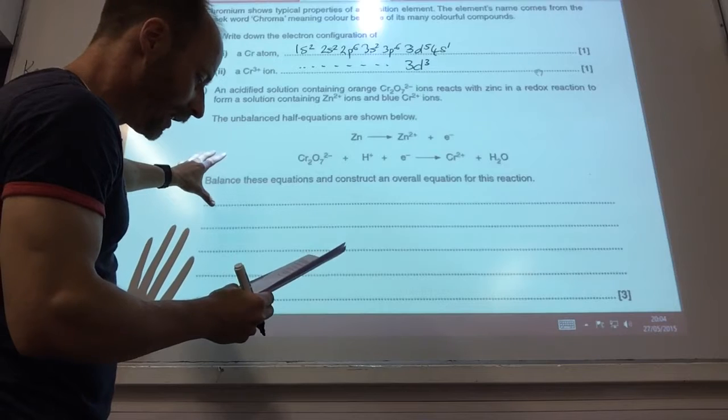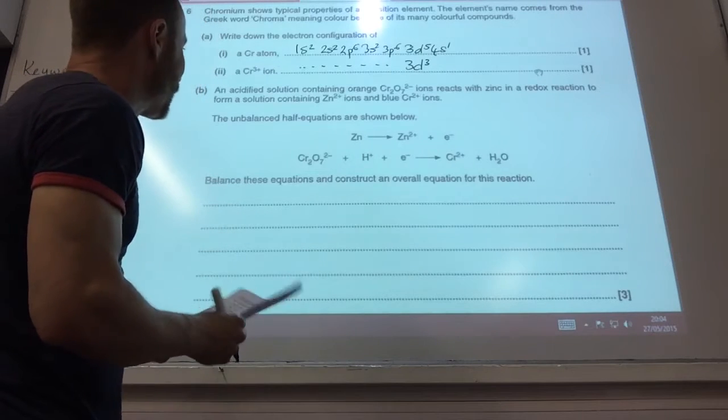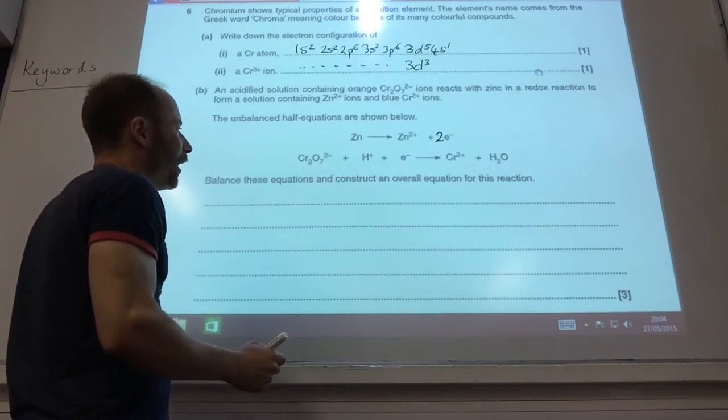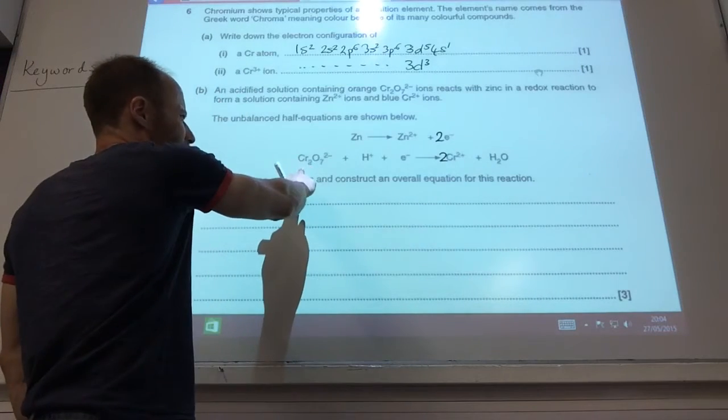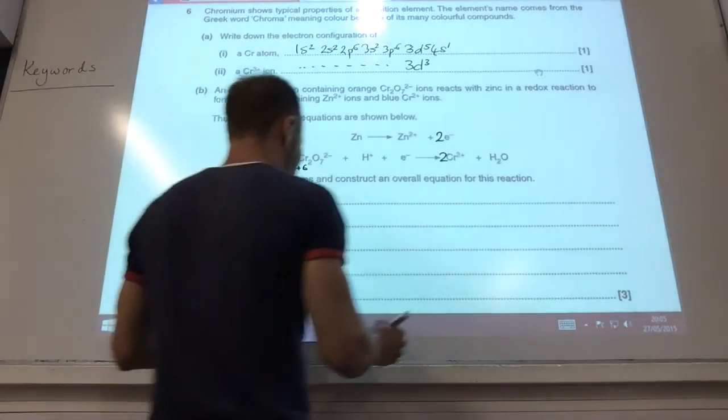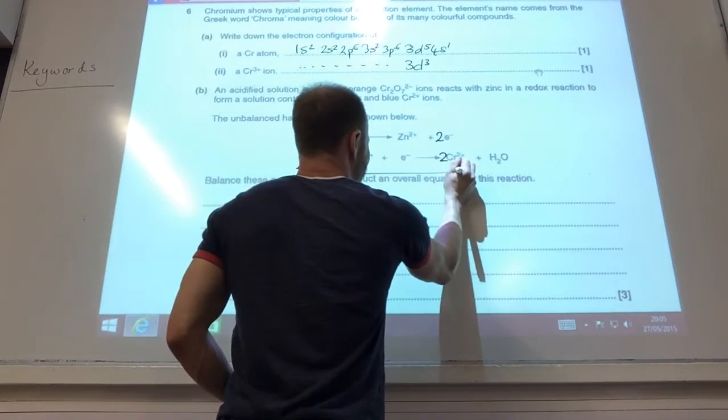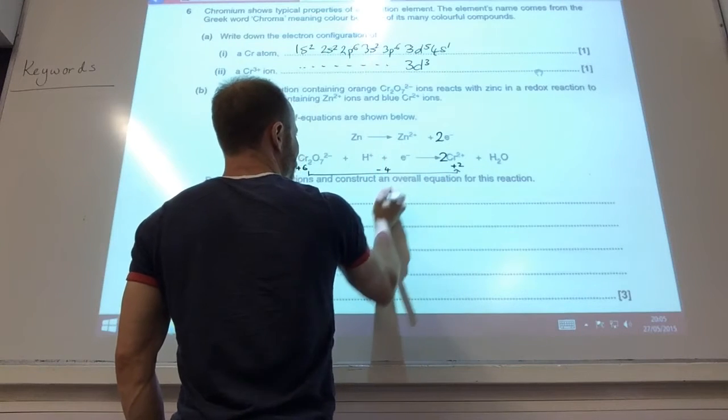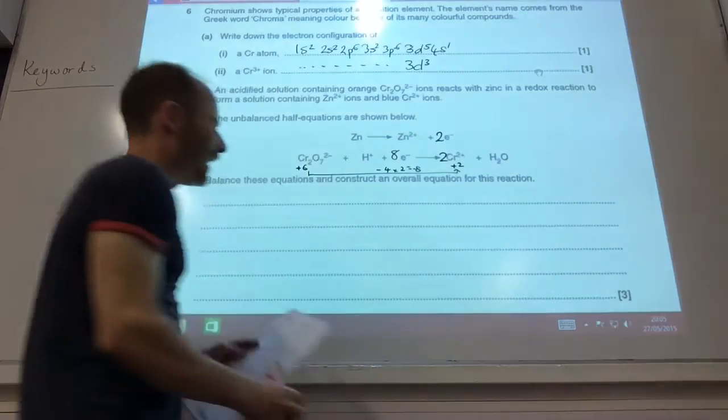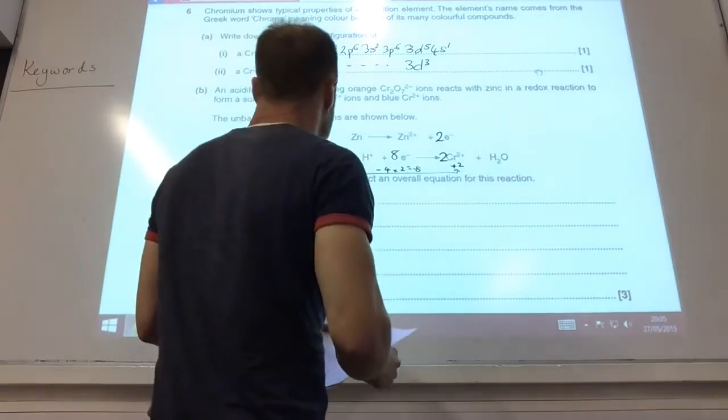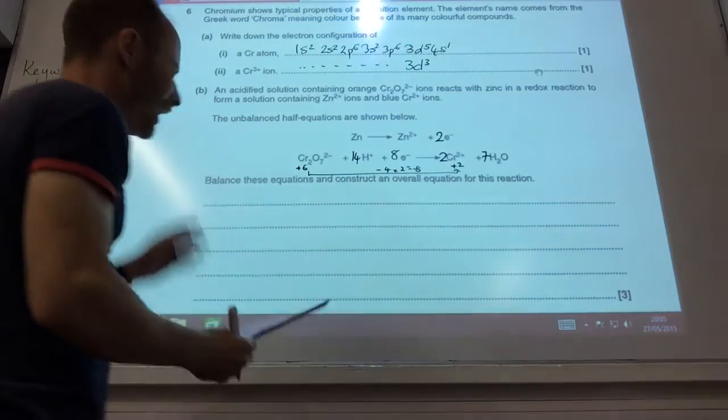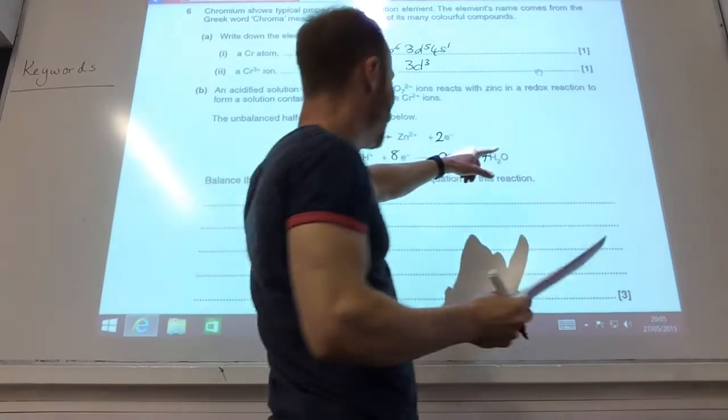Right, acidified solution, reaction with zinc. Unbalanced half equation shown below. Balanced equation and constructive equation. Right, zinc to zinc 2+. I'm obviously going to need two electrons there to balance out the charge. Let's have a look here. First of all, I'm going to have two chromiums there, haven't I? So I've got two chromiums there. Chromium there is +6, if I'm not mistaken, and there is +2, so that is a change of -4, but I've got two of them, so -8. So I need 8 electrons to get that to balance. I'm going to have to make 7 waters, because I've got 7 oxygens there, which means I need 14 H pluses there.